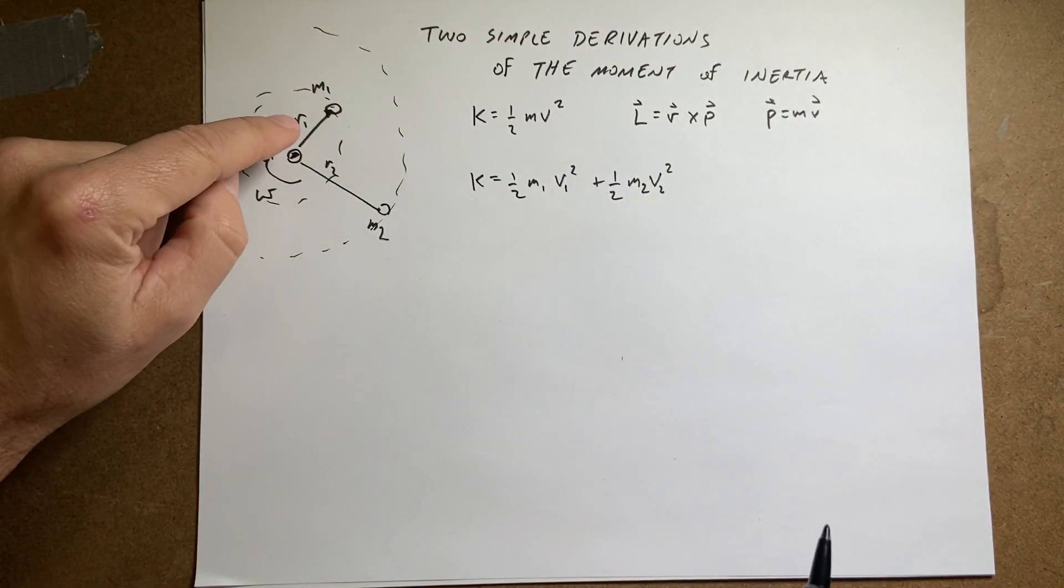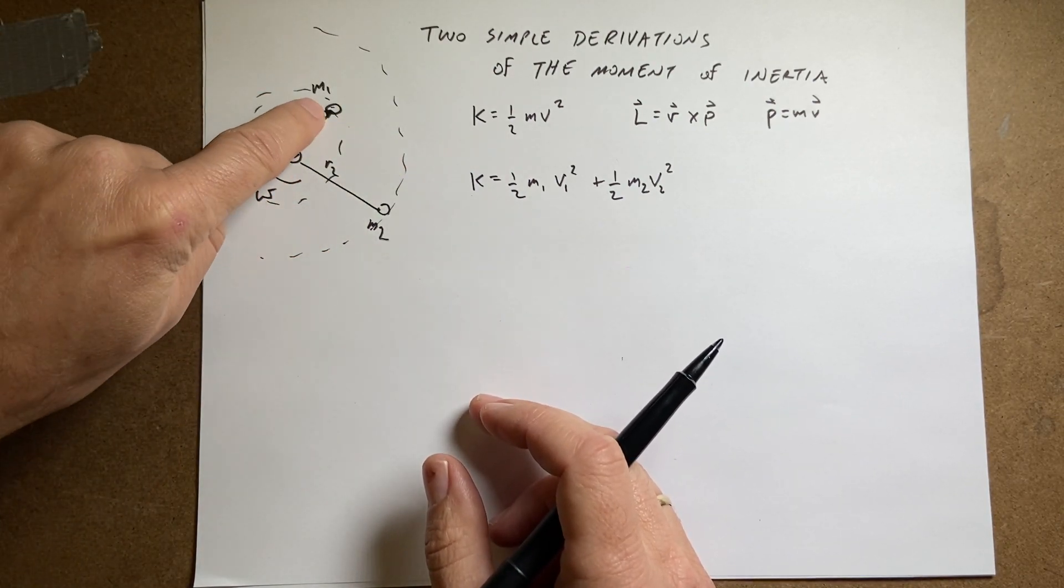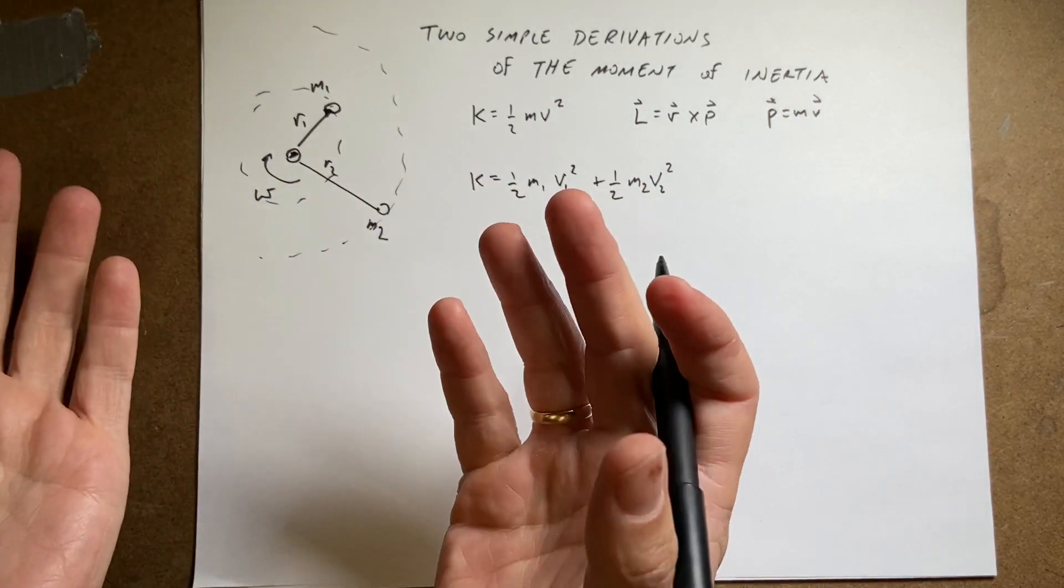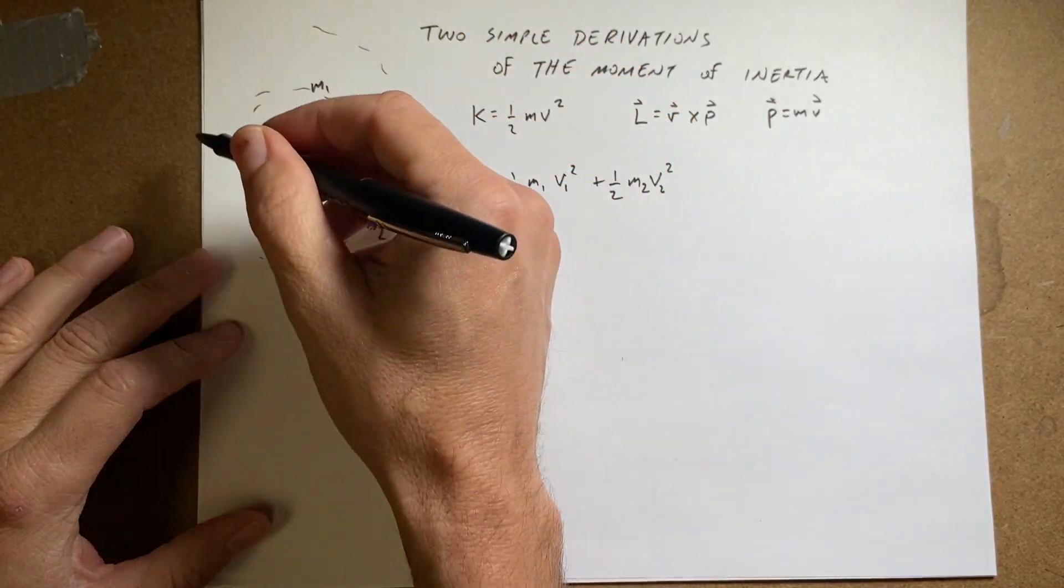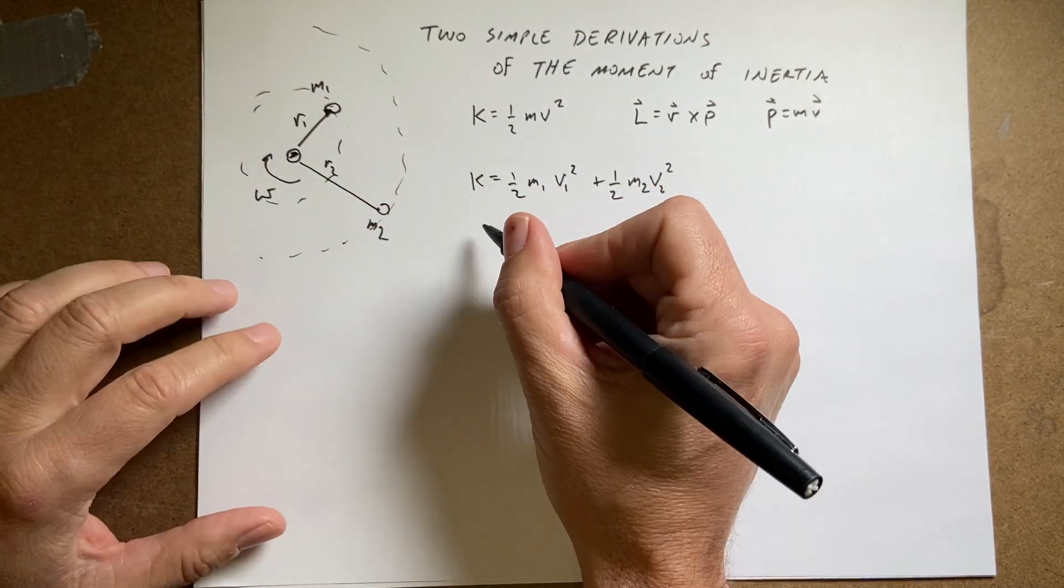So they have different speeds. It's a rigid object, but since this is rotating with an angular velocity omega, then this mass is actually going faster. So if you imagine this to be like a full circle, and how long it takes to get around there, you can see that the distance around is 2 pi r.